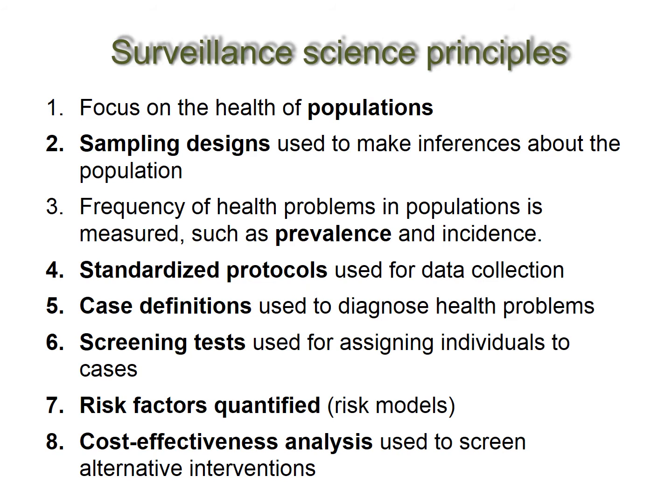What we've done is borrow surveillance science principles from public health and apply them to land health. One principle is to focus on the health of populations and use proper sampling designs so we can make inferences back to a whole population, whether that's a country or a given area under a given crop. We can talk about the prevalence and incidence of problems given that we've used standardised protocols, case definitions, rapid screening tests, quantification of risk factors using risk models, and lastly cost-effectiveness analysis.